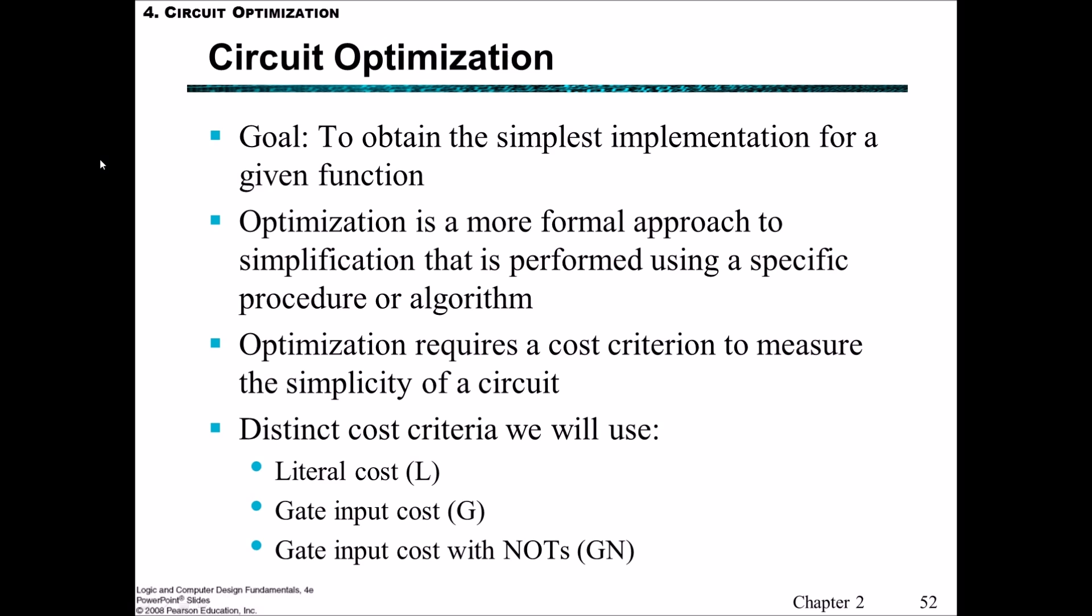The word optimization is a more formal way of saying simplification, and it's performed using some specific procedure or algorithm. We usually have some sort of cost criteria that we measure so that we can work out how simple the circuit is. Some cost criteria that we're going to use are the literal cost L, the gate input cost G, or the gate input cost with NOTs, GN.